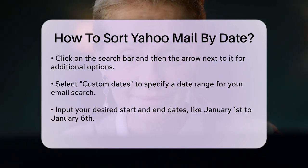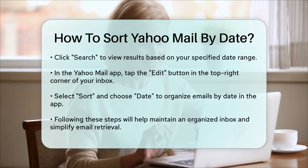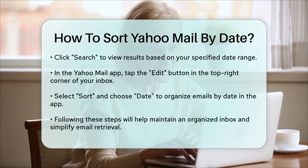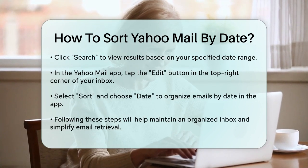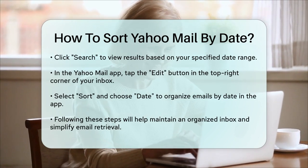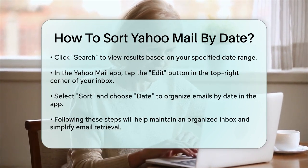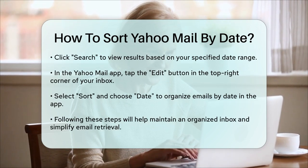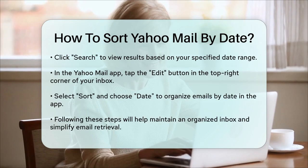In the Yahoo Mail app on your iPhone or Android device, the process is a bit different, but still straightforward. Open the app, go to your inbox, and tap the Edit button in the top right corner. Then, tap on Sort and select Date to arrange your emails by date.